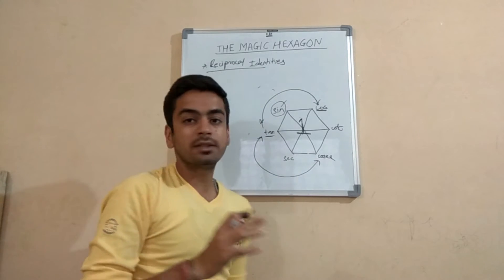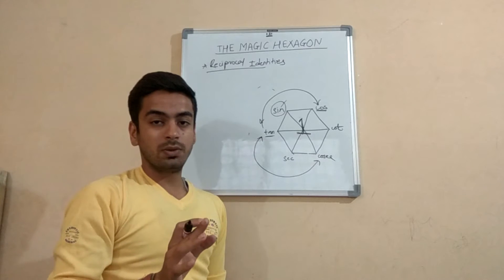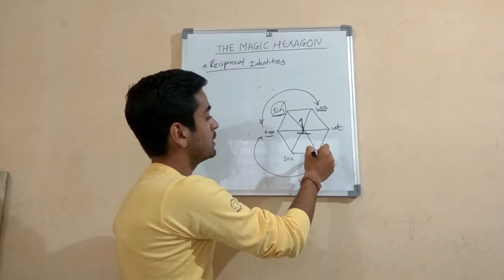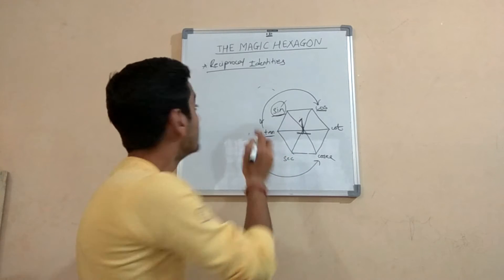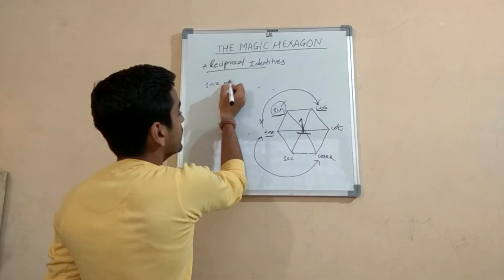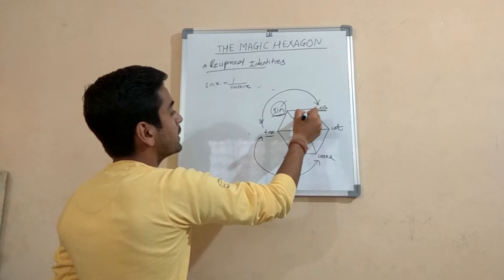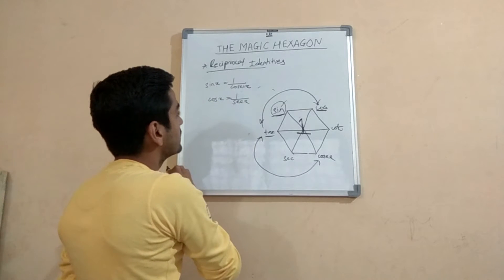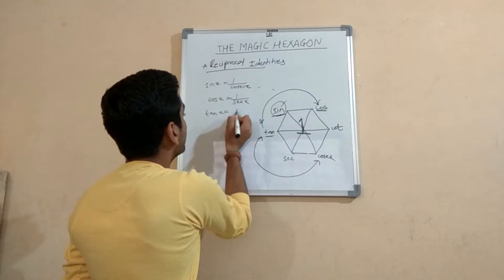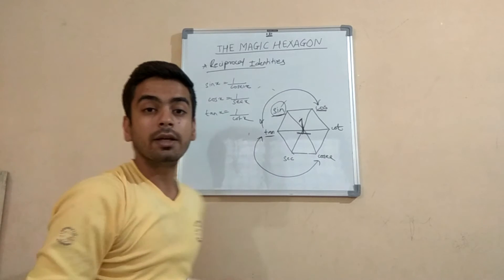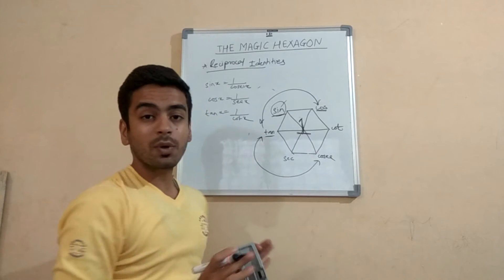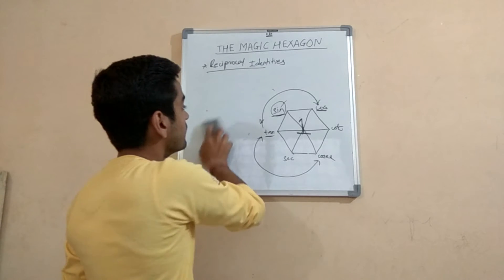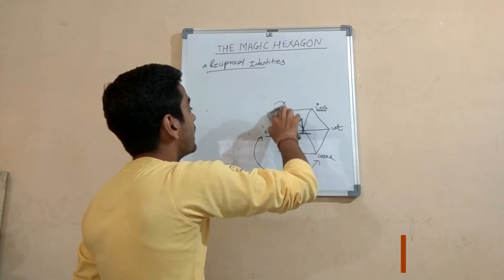The reciprocal identity says that opposite functions are reciprocals of each other. Sin x is equal to 1 upon cosec x. In the similar manner, cos x is equal to 1 upon sec x, and tan x is equal to 1 upon cot x. You can write these in reverse order also. These were the reciprocal identities.